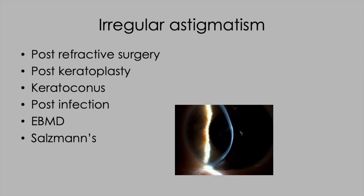Here are some examples of clinical situations in which we commonly encounter irregular astigmatism. Older style refractive surgery procedures, radial keratotomy for example, post-keratoplasty, keratoconus — this is a stage 4 cone we're seeing here — and I would refer you to our video on trans-PRK and cross-linking for the treatment of irregular astigmatism in the early stages of keratoconus.